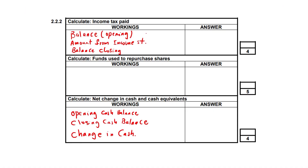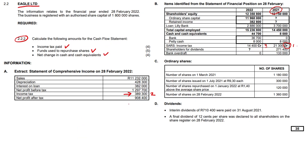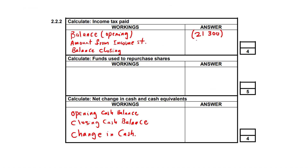Your income tax balance at the beginning of the period is 21,300. We're not owing the receiver money — that money is owed to us, so we pop that into brackets. Then the amount from the income statement is 389,300. The closing balance picked off the balance sheet for the current year is 14,400 that we owe to SARS, and that figure goes in brackets. Crunching those three amounts gives us 353,600 as the total tax paid for the year.